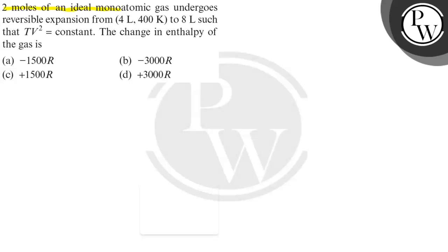2 moles of an ideal monoatomic gas undergoes reversible expansion from 4 liter 400 Kelvin to 8 liter such that TV square is equal to constant.